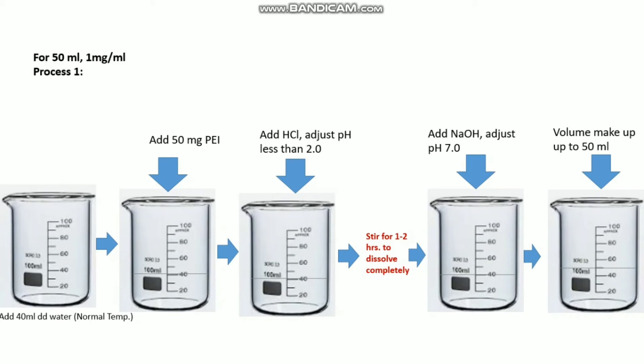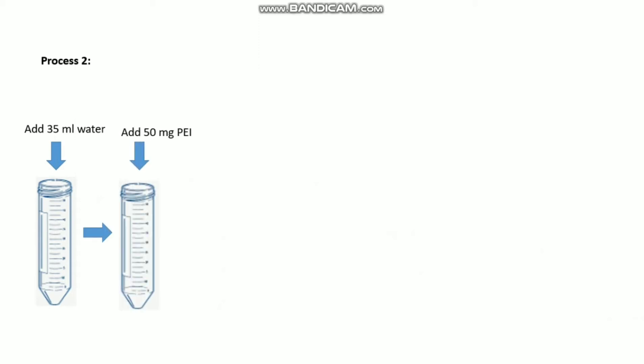Process two: In one 50 ml tube, add 35 ml dd water at normal temperature, then add 50 mg PEI. At 60 to 70 degree centigrade water bath, put it for a little longer time.